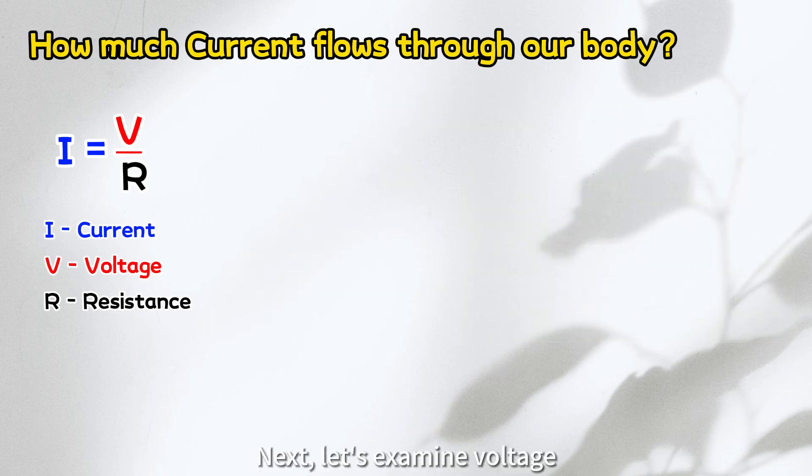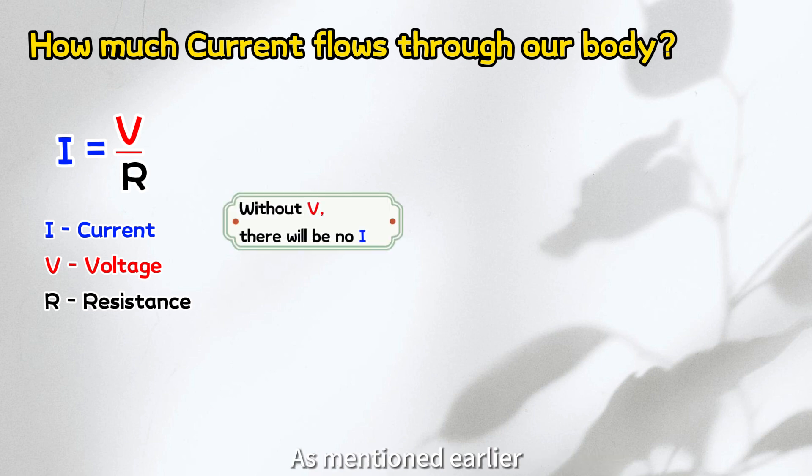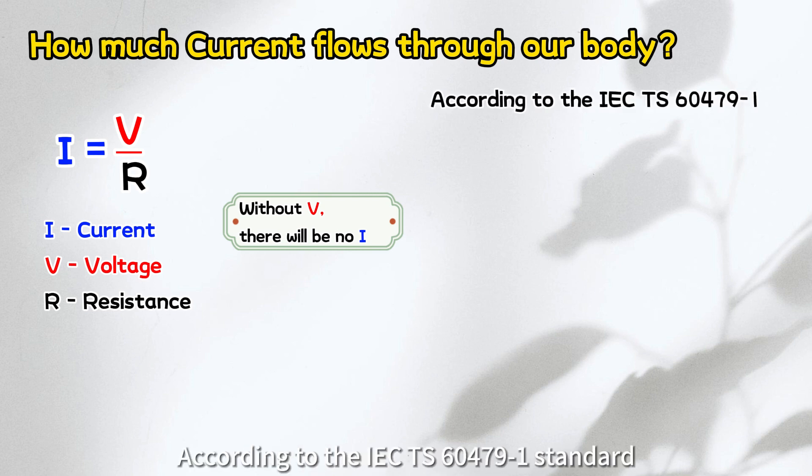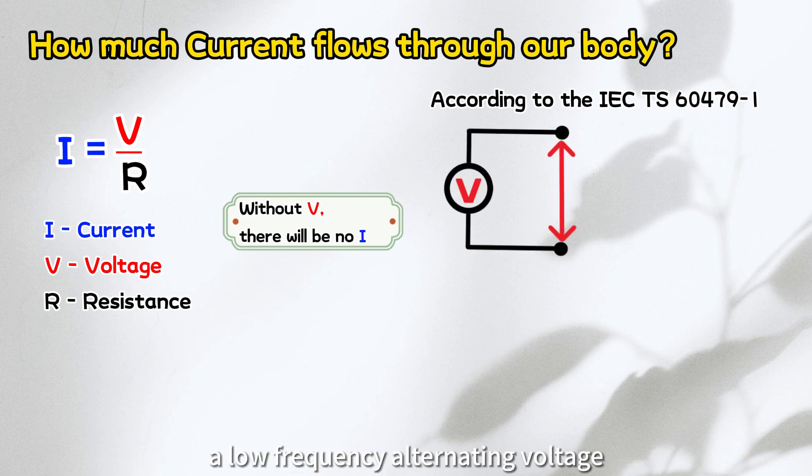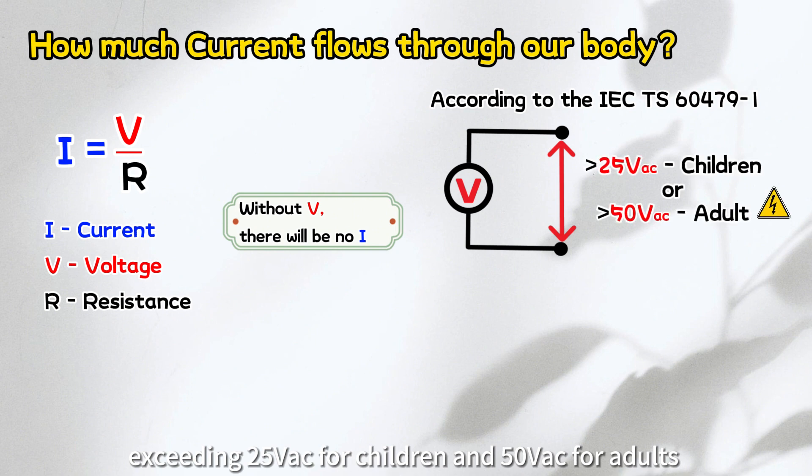Next, let's examine voltage, which is the source of electrical energy. As mentioned earlier, without voltage, there would be no current flowing. But how much voltage can result in hazardous current to humans? According to the IEC TS 60479-1 standard, a low-frequency alternating voltage exceeding 25 volts for children and 50 volts for adults is considered hazardous.